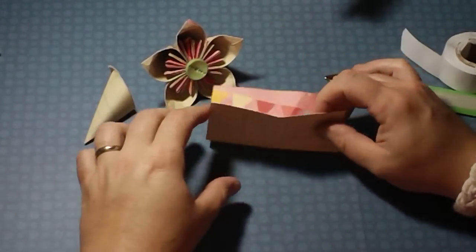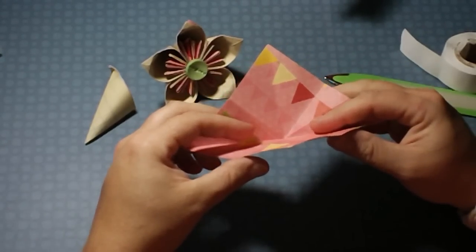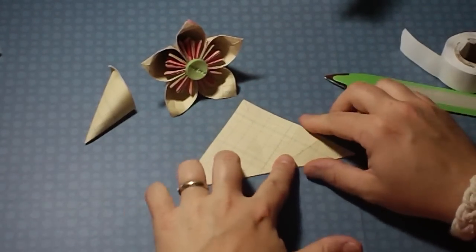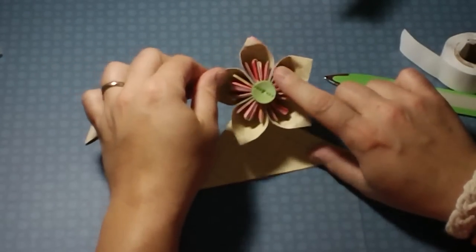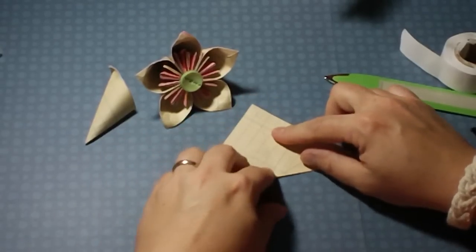So now we have folded our square into eight pieces. Now we're going to take it back up into a triangle just like that. Whatever you want the inside of your petals to look like, I chose pink, that's what you want on the inside of your fold when you do this first fold.